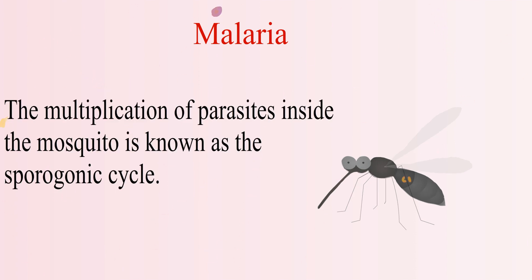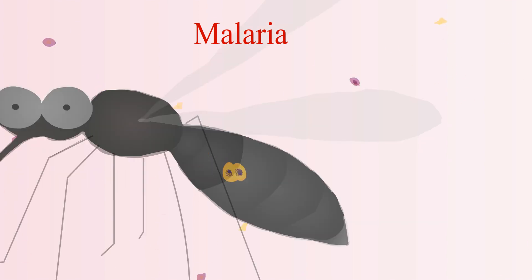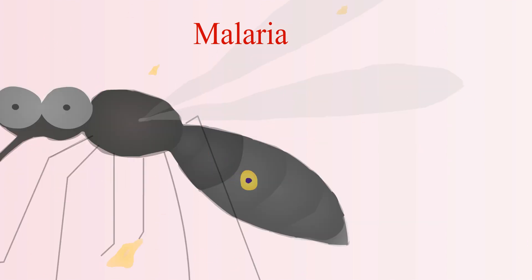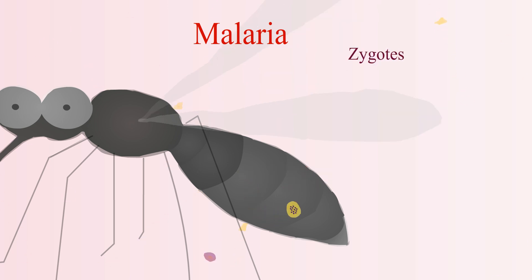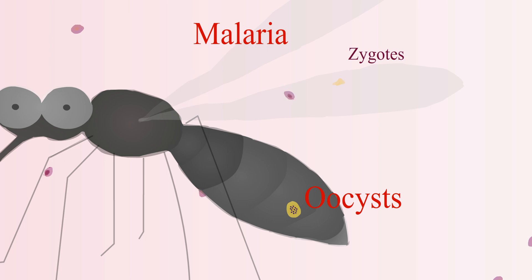The multiplication of parasites inside the mosquito is known as the sporogonic cycle. Inside the mosquito's stomach, the microgamet will penetrate the macrogamet to generate zygotes. The zygotes will then elongate and become motile, which will invade the mid-gut wall of the mosquito to become oocysts.